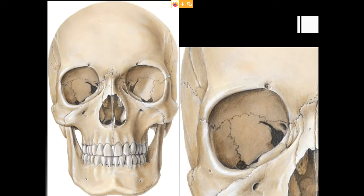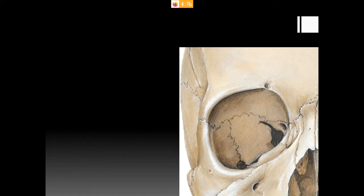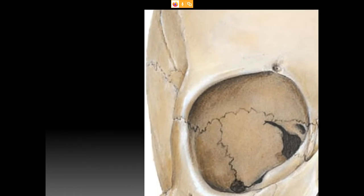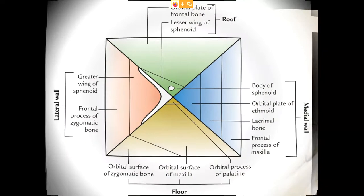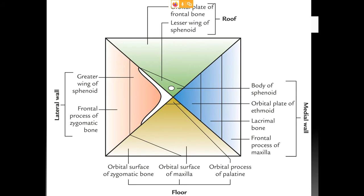Before looking at the contents, we must know about the boundaries of the orbit. In this picture you can identify the skull, and I have separated the right-side orbit to show you the boundaries. The shape of this orbit is a four-sided pyramid; the apex projects posteromedially and it has four sides — roof, floor, medial wall, and lateral wall.